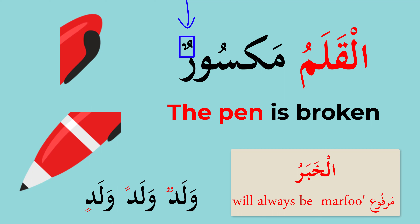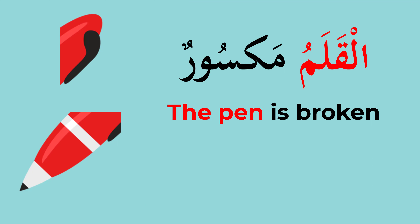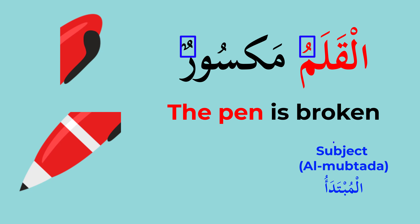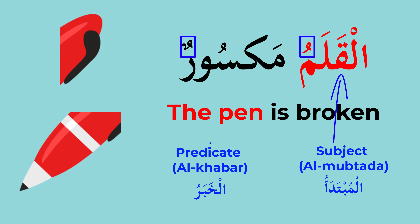So, brothers and sisters, here we have al-qalamu maksoorun. Is al-qalamu marfoo? Yes. Is maksoorun marfoo? Yes. Both are marfoo. Al-qalamu is the Mubtada — 'the pen.' And maksoorun is the Khabar — 'it is broken.' So we have Mubtada and Khabar.